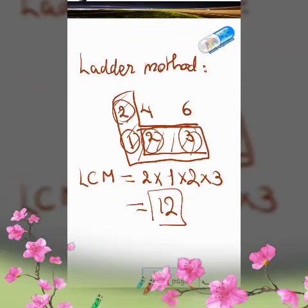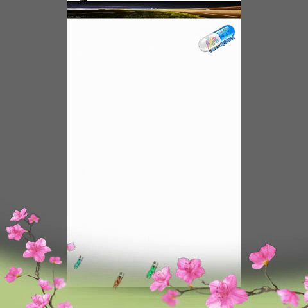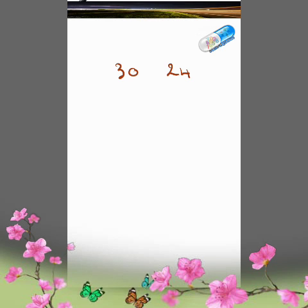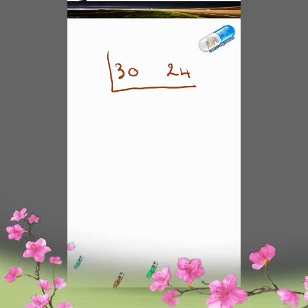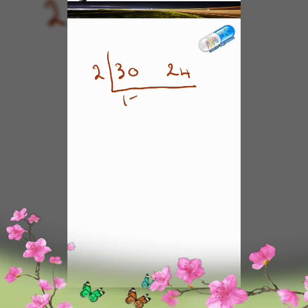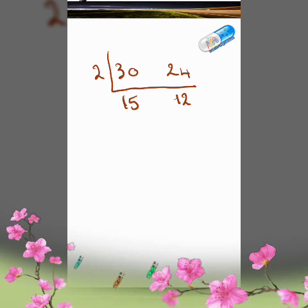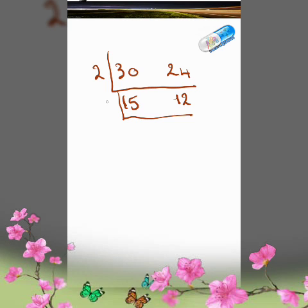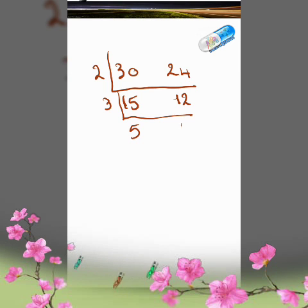Let's take another example with bigger numbers: 30 and 24. Using the ladder method, 30 and 24 can both be divided by 2. 30 divided by 2 is 15, 24 divided by 2 is 12. Then 15 and 12 can both be divided by 3: 15 divided by 3 is 5, 12 divided by 3 is 4.